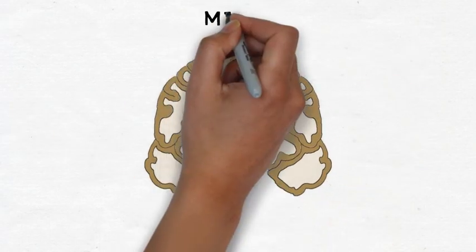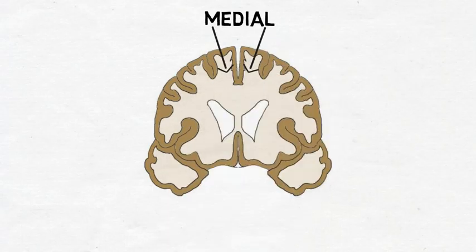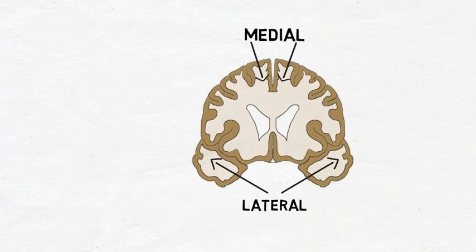When looking at the brain or spinal cord in any orientation, the parts of the brain that are closer to the midline are called medial, while those that are closer to the sides are called lateral.